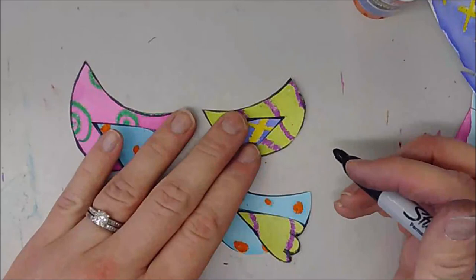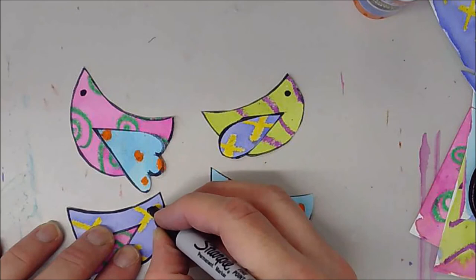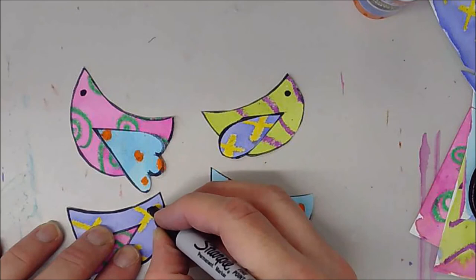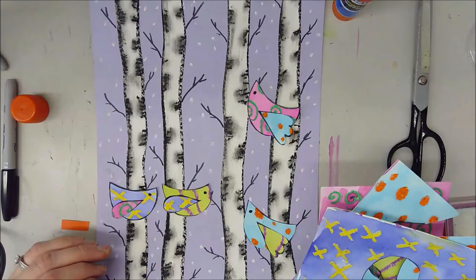Next I'm going to add some eyes so I can further identify which end is the head and which end is the tail. You'll also notice our poor birds don't have beaks or feet but that's something we're going to add once we get them onto our trees.